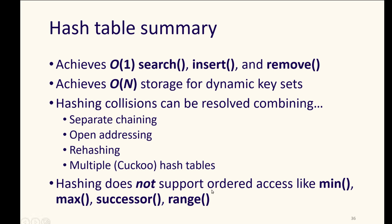But, hashing does not support ordered access, like getting a minimum, a maximum, the successors that we've looked at in binary trees, or getting ranges of things. So, there are still some capabilities that something like a binary search tree is going to be better at, or something like a sorted array is going to be better at. But our hash tables can do this job of lookup for us very, very well.